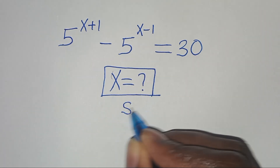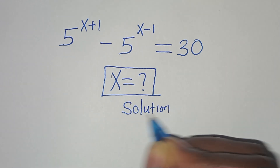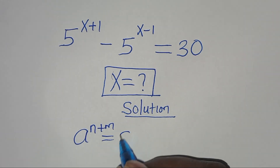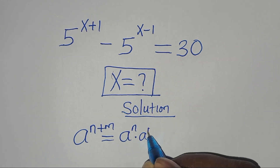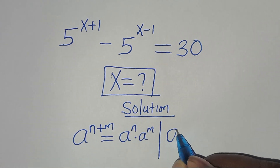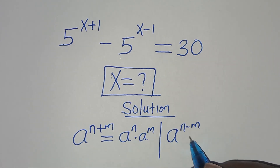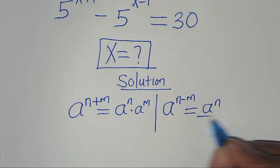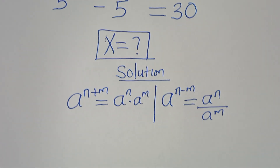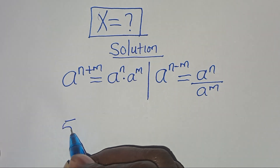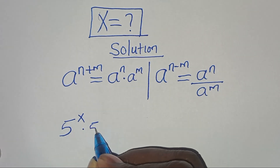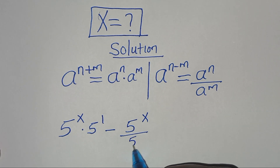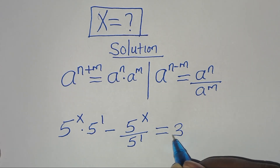Now let's provide a solution from here. This exponential equation is in the form of a to the power of n plus m, which we can express as a to the power of n times a to the power of m. And again, this exponential equation is in the form of a to the power of n minus m, which we can express as a to the power of n divided by a to the power of m. So applying these two exponent properties, we have 5 to the power of x multiplied by 5 to the power of 1, subtract 5 to the power of x divided by 5 to the power of 1. This is equal to 30.